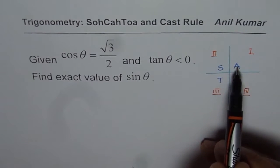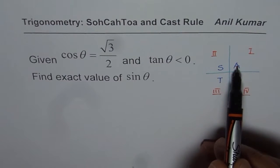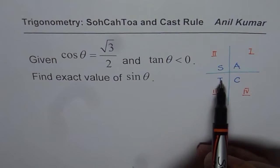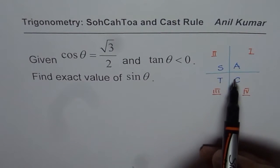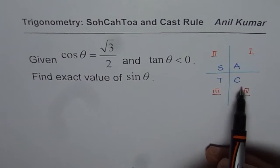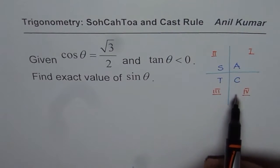That means tan is positive in quadrants one and three, and tan is negative in the other two quadrants. Cosine is positive in quadrant four.